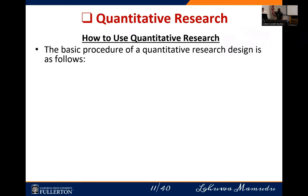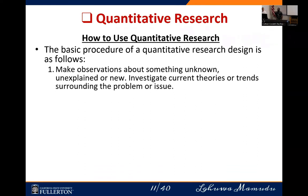Now let's look at how to use quantitative research. There are basic procedures. The first is to make observations about something unknown. Before proceeding with quantitative research, you first make an observation — for instance, as a medical doctor, you might observe that people diagnosed with hypertension are mostly in the aged group, say 65 plus. Based on that observation, you then investigate how true it is that hypertension is associated with the aged group.